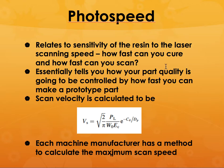You can also calculate the scan velocity, but again these have already been calculated by the machine. Each machine manufacturer has a method to calculate the maximum scan speed, which essentially tells you how good your part quality is going to be — controlled by how fast you can make a prototype part. If you make a part very fast, you will not get a very good surface finish, but making it slow affects how long it takes to produce. There is a balance between the two.